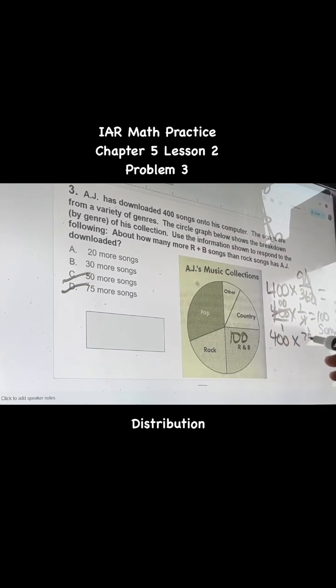400 times 75 over 360 equals 400 times 5 over 24. And then you multiply across. And then you're going to reduce. You should come up with 83.